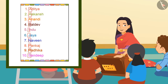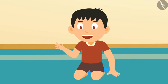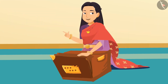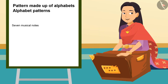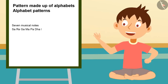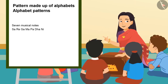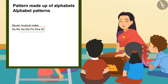Writing all names alphabetically is a kind of pattern, so we can say this is a pattern made of alphabets. Are there any more examples of alphabetical patterns? Yes, of course. You all know about the seven musical notes, right? These musical notes are also made up of alphabets. Let's make some patterns using musical notes today. Remember, there is no fixed rule for making patterns — you can make your own rule.